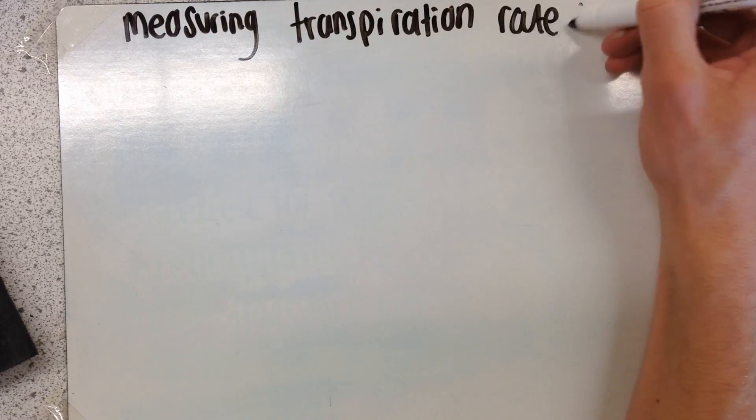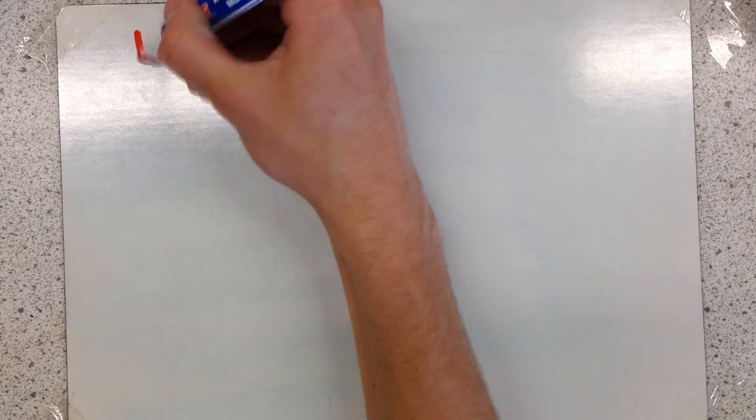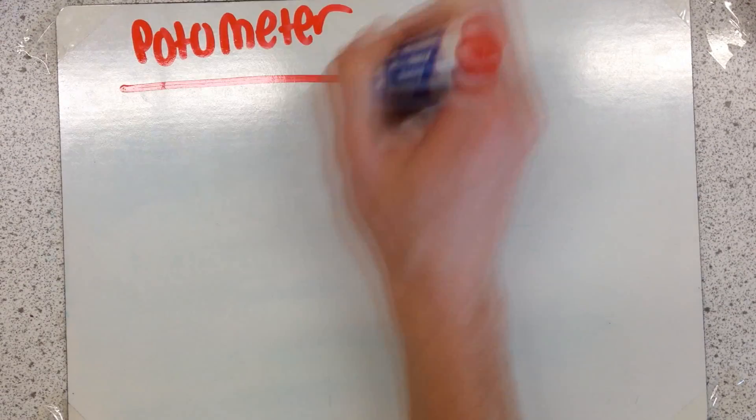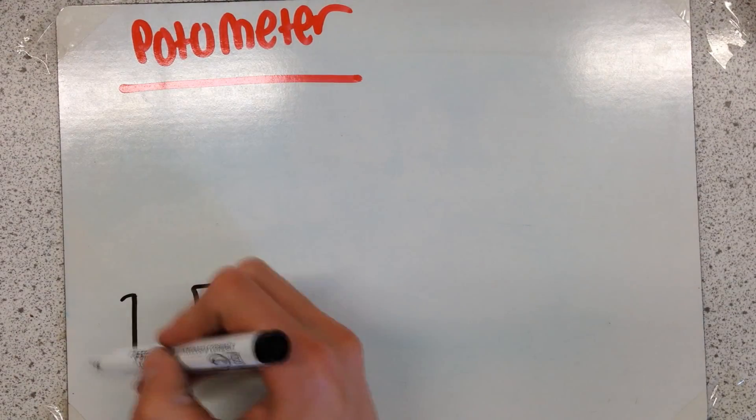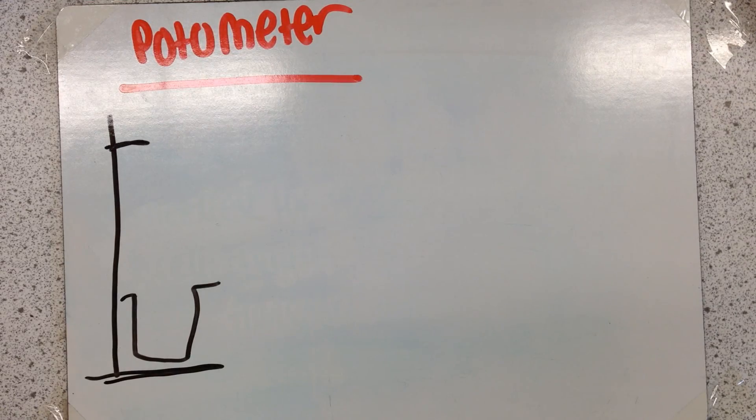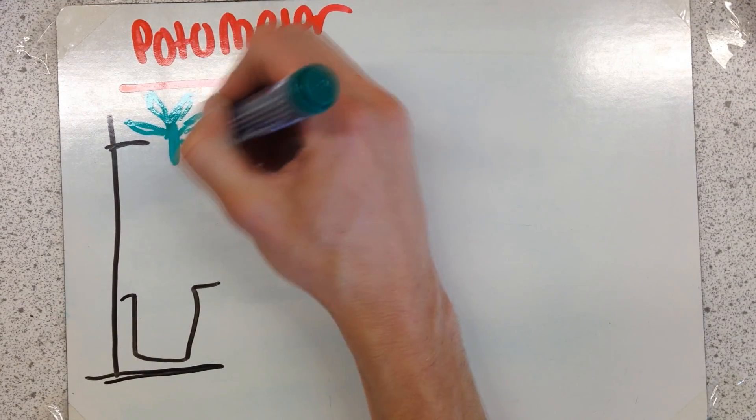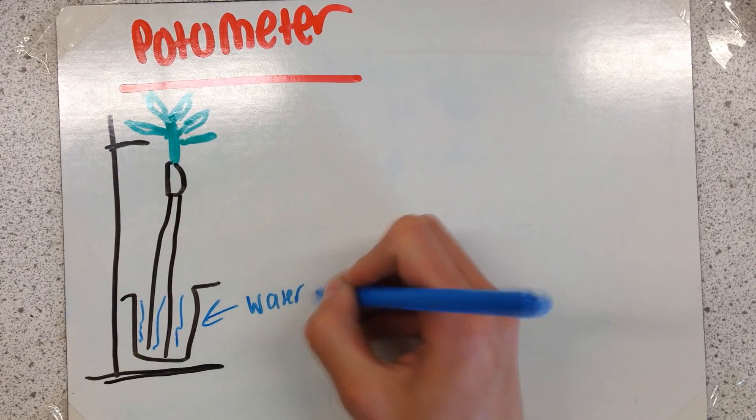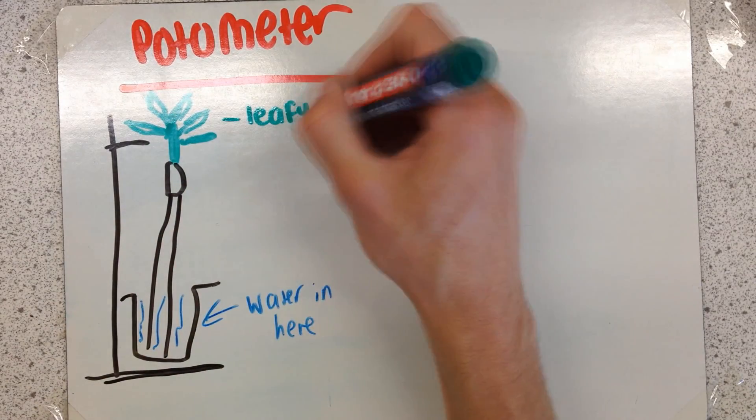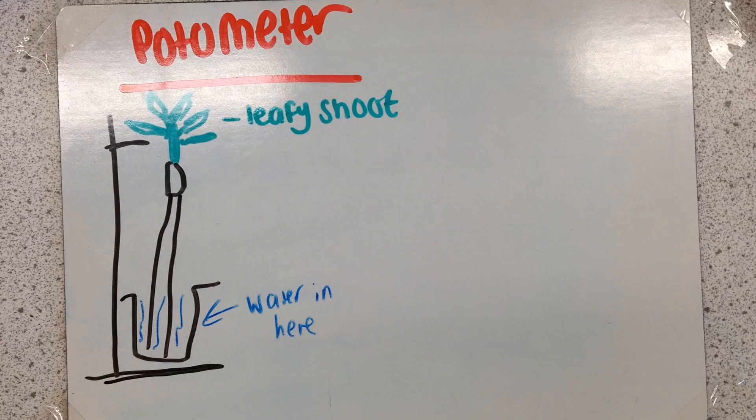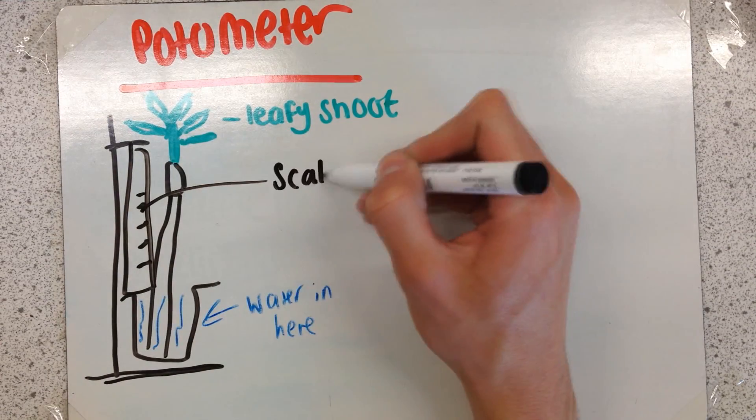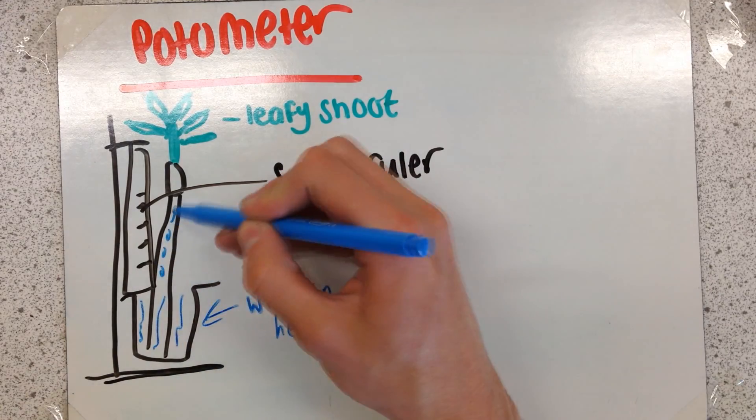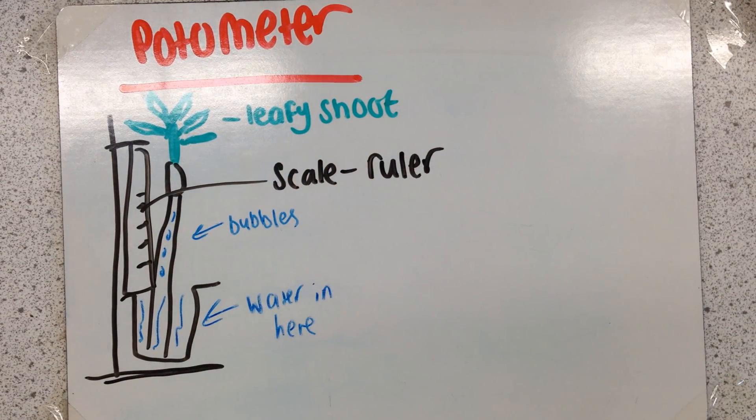How is water movement measured? Using a potometer. Essentially it's a leafy shoot attached to a synthetic xylem made of glass that allows capillary action. When water is lost from the aerial parts of this plant, more water will be taken up from below because here we have lots of water available. The rate is measured using a scale or a ruler.